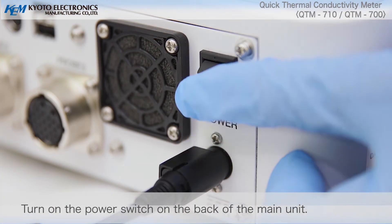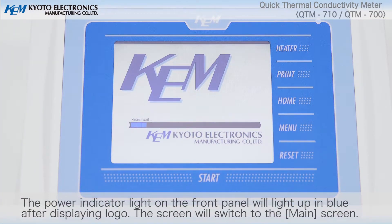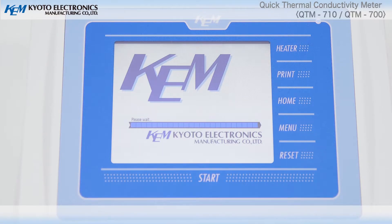Turn on the power switch on the back of the main unit. The power indicator light on the front panel will light up in blue after displaying logo. The screen will switch to the main screen.